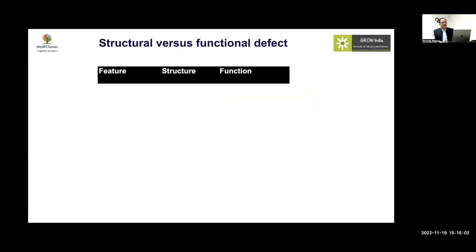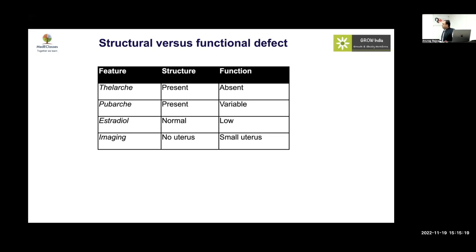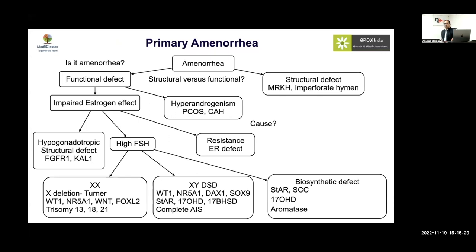Normal breast development, normal pubic hair, and amenorrhea together point toward a malformation. To differentiate structural from functional causes: in a girl with thelarche and pubarche with normal estradiol, it is usually a structural defect — go for imaging. If there is thelarche but variable pubarche, think about hypogonadotropic hypogonadism. The key examination findings include hirsutism, which in the setting of normal breast and pubic hair development would suggest PCOS as a cause of primary amenorrhea.